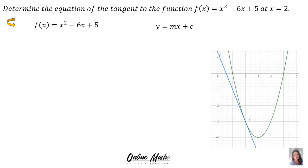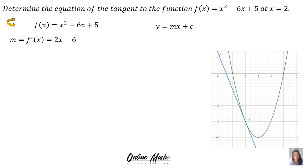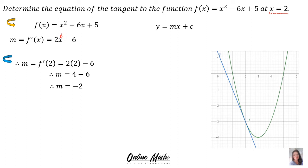Step 1: take the original function and find the derivative to get the gradient formula: f'(x) = 2x - 6. This is the general formula for the gradient of any tangent to that function. Our tangent is at the specific point x = 2, so we substitute: 2 × 2 - 6 = 4 - 6, giving m = -2. At that point, the gradient is -2.